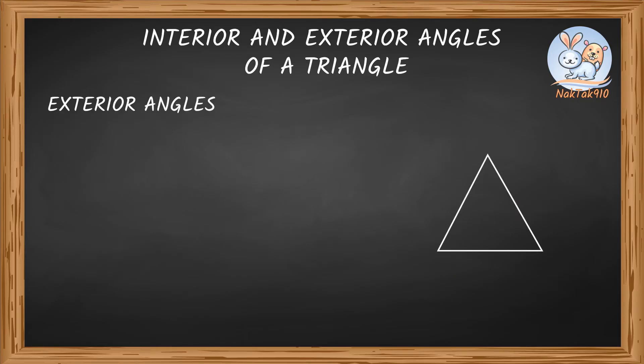Exterior angles of a triangle. An exterior angle of a triangle is an angle formed by one side of a triangle with an extension of its adjacent side. If the line BC is extended to D, there is an angle formed ACD. This is called an exterior angle.